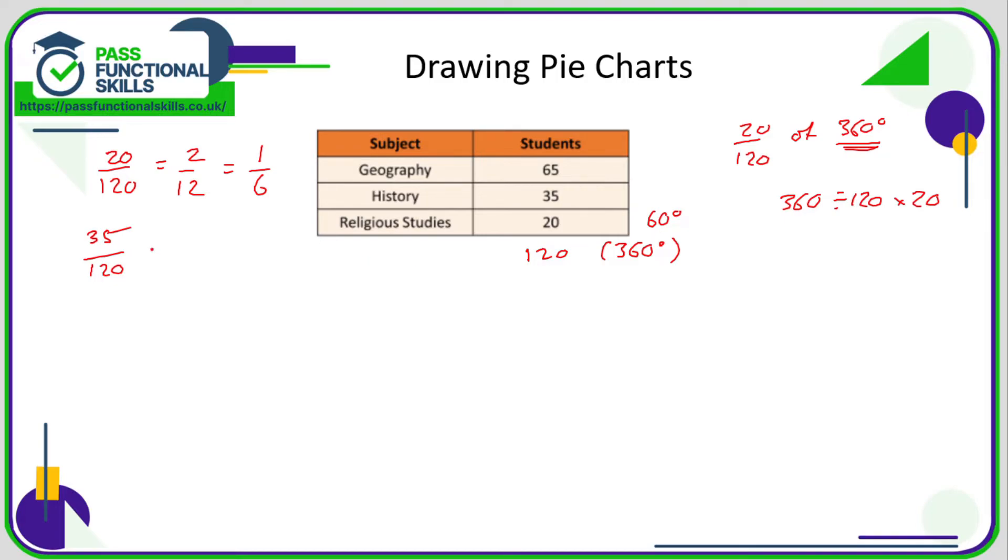So we can do exactly the same thing here. We want to work out 35/120 of the total pie, which is 360 degrees. Take the total 360, divide by the number on the bottom, which is 120, and multiply by 35. We get 105. So this should be a 105-degree slice.